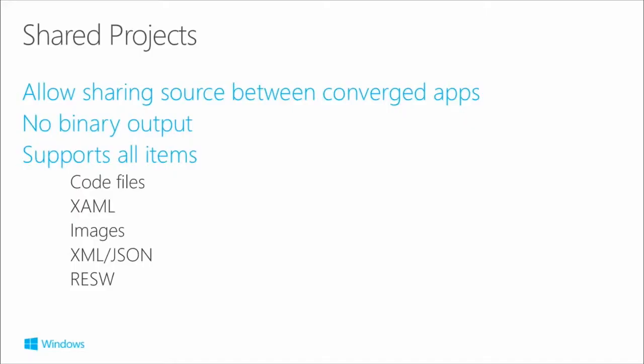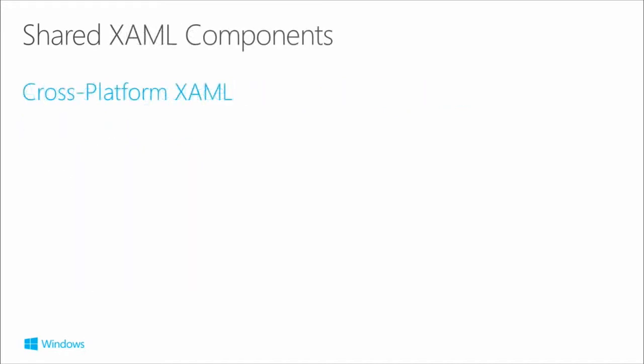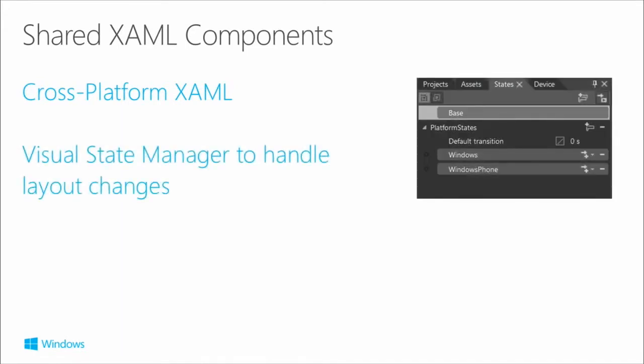The shared project is shared source between converged apps. It has no binary output and supports all types of items. For shared XAML components with cross-platform XAML, you can use the Visual State Manager to handle layout changes.